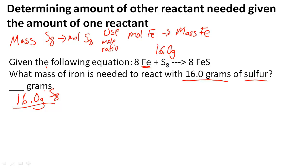We have the mass of sulfur here. We're going to divide it by its molar mass which is 256.5 grams per mole, and that's going to give us 0.0624 moles of S8.